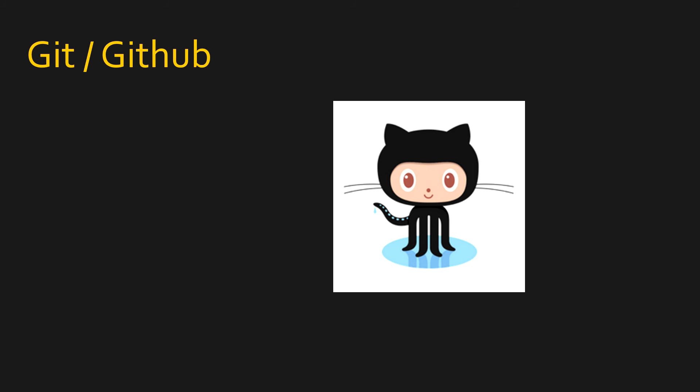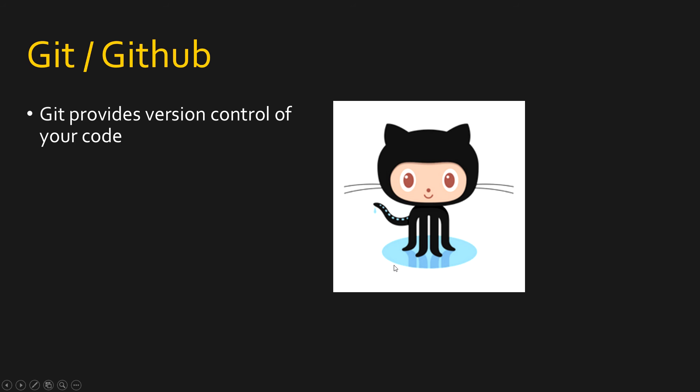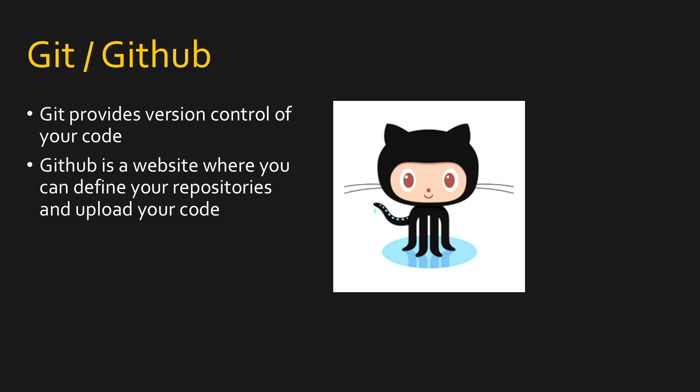Git and GitHub are two of the most used tools for version control. Git is installed locally on your Linux host, and anything you're tracking — any code changes, any playbook changes — you can version control the code of your network devices locally using Git. And then if you want to share that and let others view it, you need to use GitHub, which is a website where you can define your repositories, upload your code, and collaborate with other users.